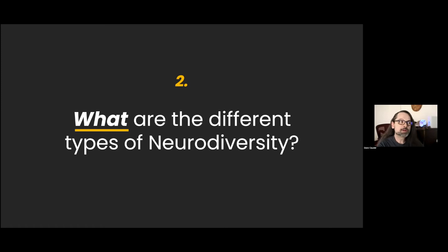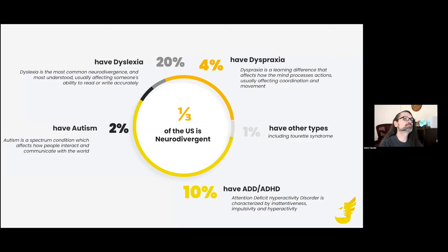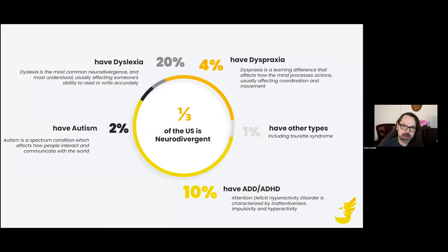Let's talk about what are the different types of neurodiversity. The most common type of neurodivergence in the U.S. population is dyslexia — about 20% of the population has dyslexia. The next most common is ADD, ADHD, which is about 10% of the population.